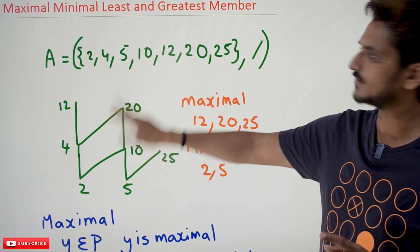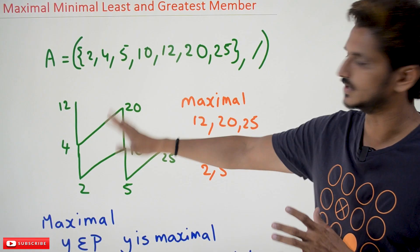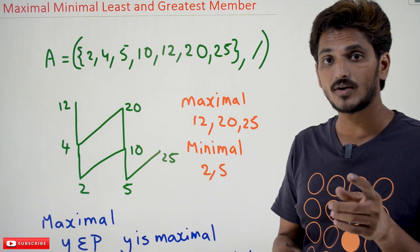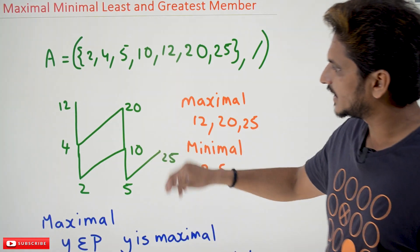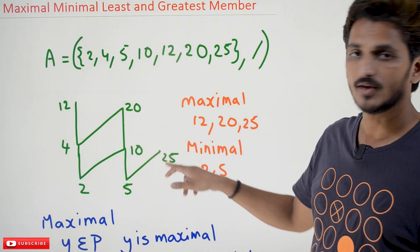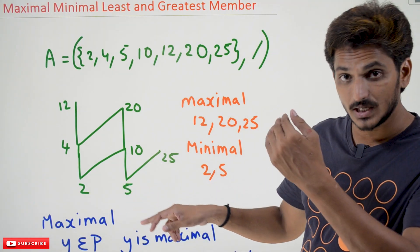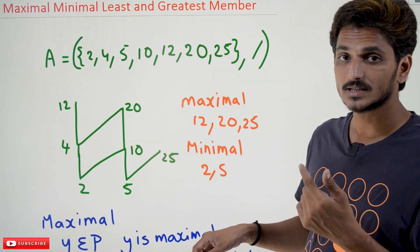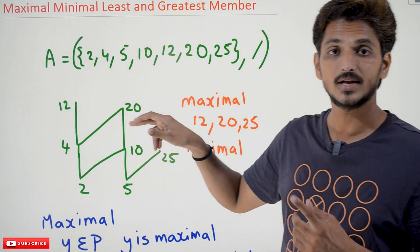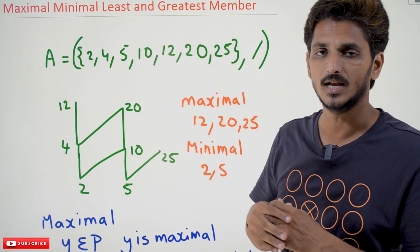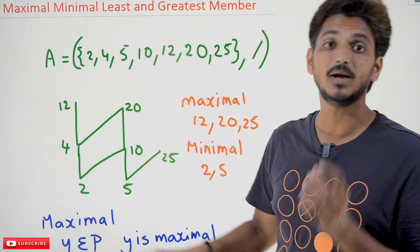This is how our Hasse Diagram looks like for this relation and set. These basics were discussed previously. By looking at this Hasse Diagram, we can identify maximal and minimal members. From this diagram, 20, 12, 25 — we call them as maximal members, and 2, 5 — we call them as minimal elements. Why do we call them maximal elements? Because above them, we don't have any other elements. Those types of elements we call maximal elements. Below 2 and 5, we don't have any other elements — that's why these two are minimal members.